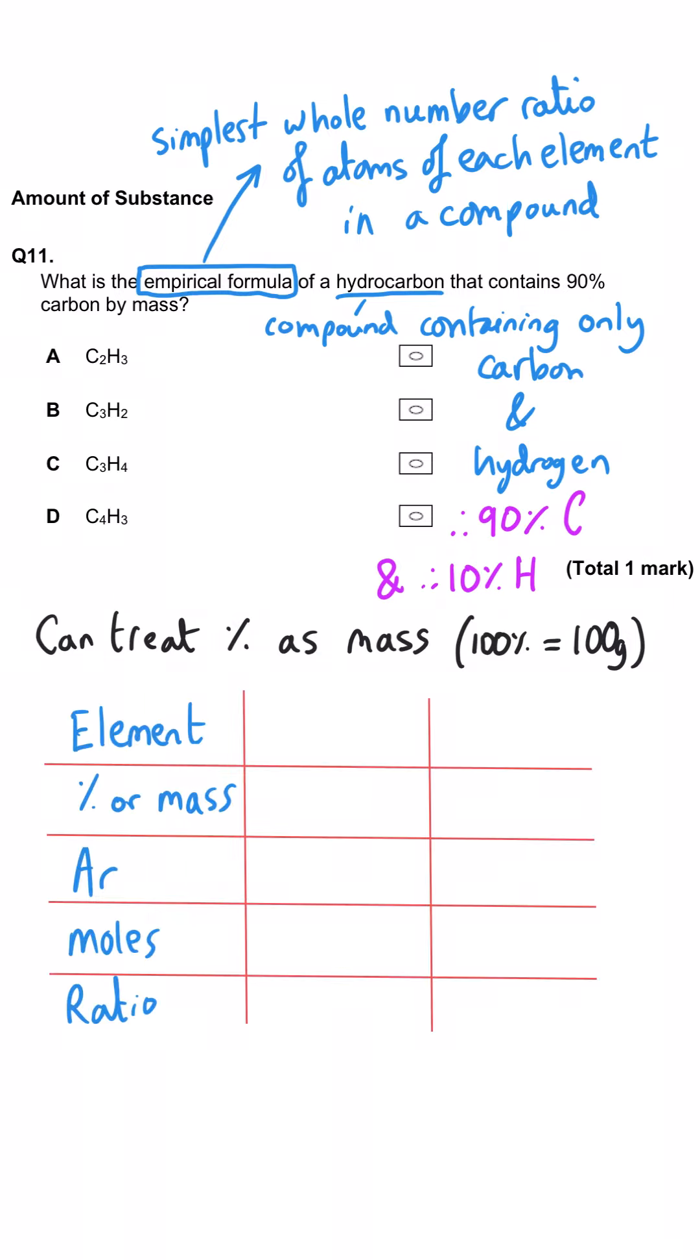We need to set out the grid for an empirical formula which has the elements along the top, then percentage or mass, then relative atomic mass, then moles and then the ratio. So 90 for carbon, AR is 12, moles is mass over AR so 7.5 moles. For hydrogen 10 is the percent, AR is 1 so the moles is 10. To turn these moles into a mole ratio we need to divide by the smallest number, 7.5, and we get a 1 to 1.333 ratio.